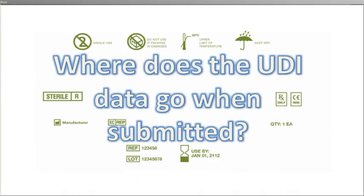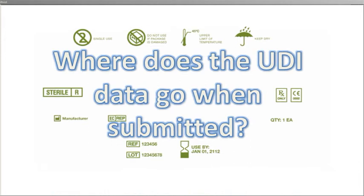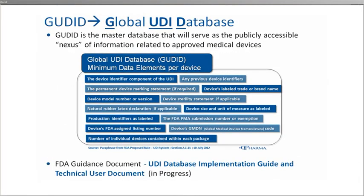So, Tom, where does the UDI go when it's submitted? As you might have guessed, the destination for all UDI data is another acronym. It is the GUDID, or GOODID, the Global UDI Database. This will be the publicly searchable master database of all medical devices approved for sale in the United States. Manufacturers will be required to submit data elements for their product to populate the GUDID. This graphic shows 13 minimum data elements per device the FDA is expected to require for submission.